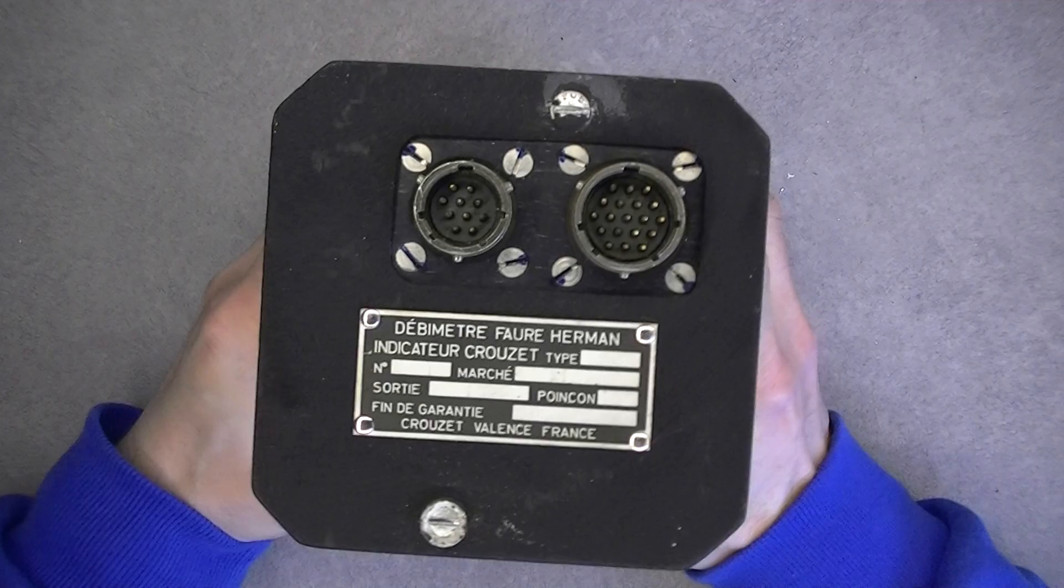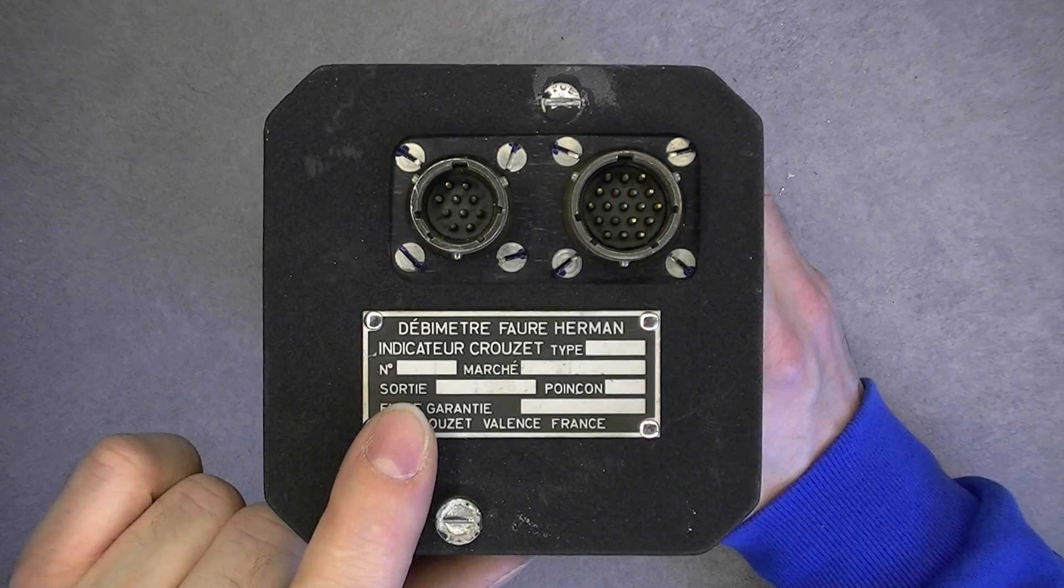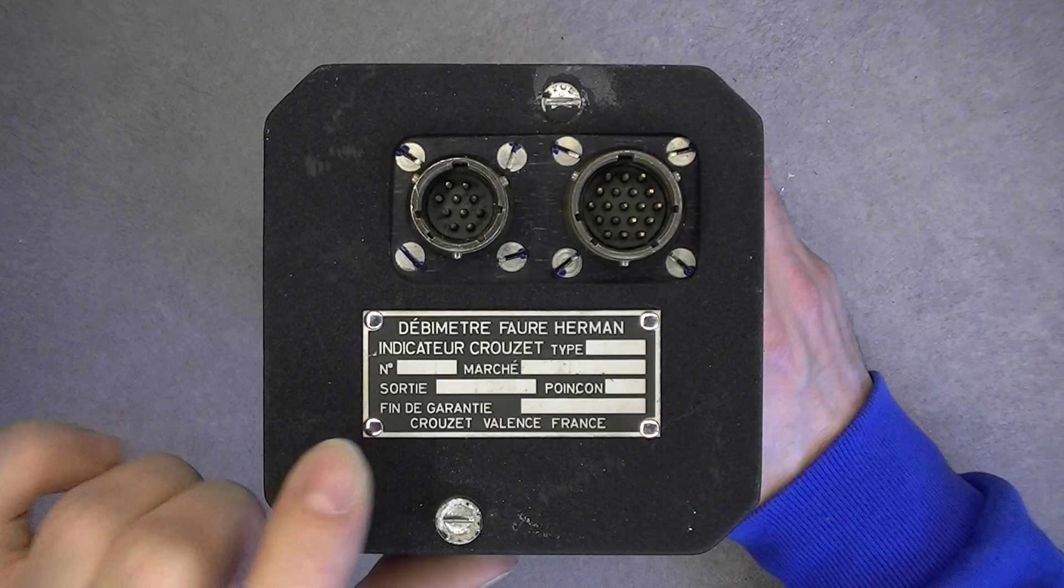If you look at the rear, no problem - real connectors, real manufacturer plate with serial number 01, which is really nice. Date code of 1967, and it is a quad flowmeter.